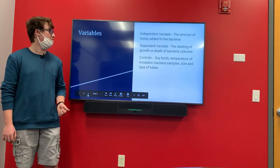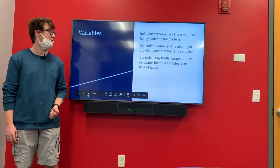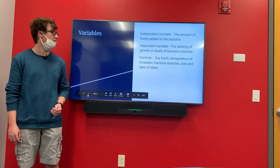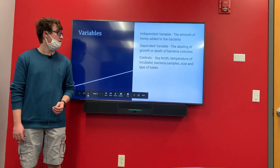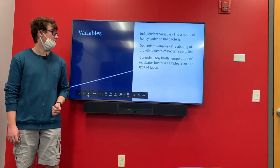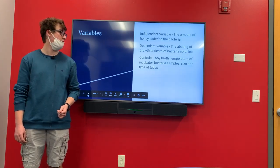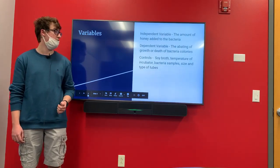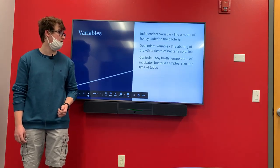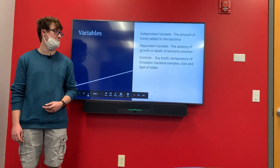The independent variable for this test was the amount of honey added to the bacteria — I did three drops in one and six in the other. The dependent variable was the abating of growth or death of bacteria colonies, and the controls were everything else like soy broth, the temperature of the incubator, the bacteria samples, and the size and type of test tubes.